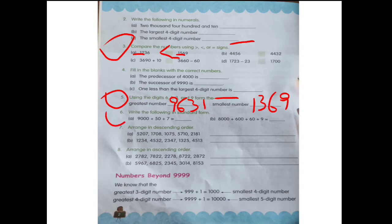Question number 6 — write the following in standard form. We have 7 in the ones place, 5 in the tens place (50), and 9 in the thousands place (9,000). We notice that the hundreds place is skipped. When there is no digit in the hundreds place, we write 0 there. So we write: 9, 0, 5, 7.